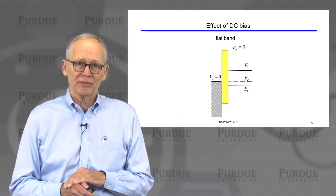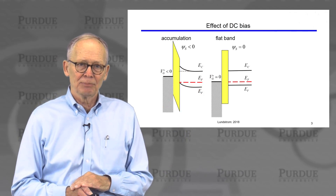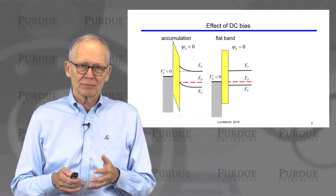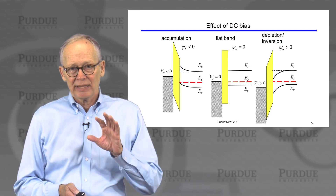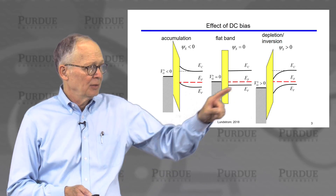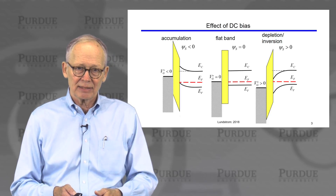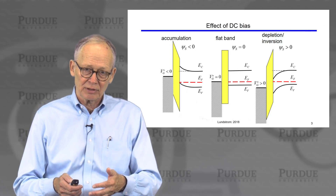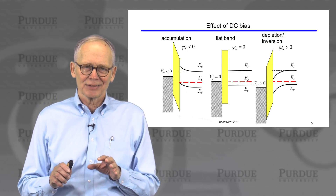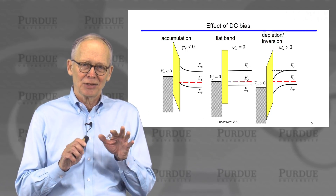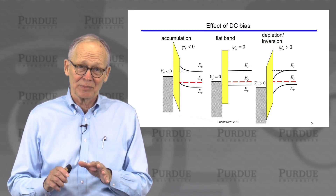At flat band there's no electric field, no band bending. A negative voltage on the gate bends the bands up — we say we accumulate the semiconductor, piling up majority carriers at the interface. When we apply a positive voltage to the gate, we bend the bands down. We first deplete this p-type semiconductor and then invert it. Note that all of the voltages are opposite for an n-type semiconductor.